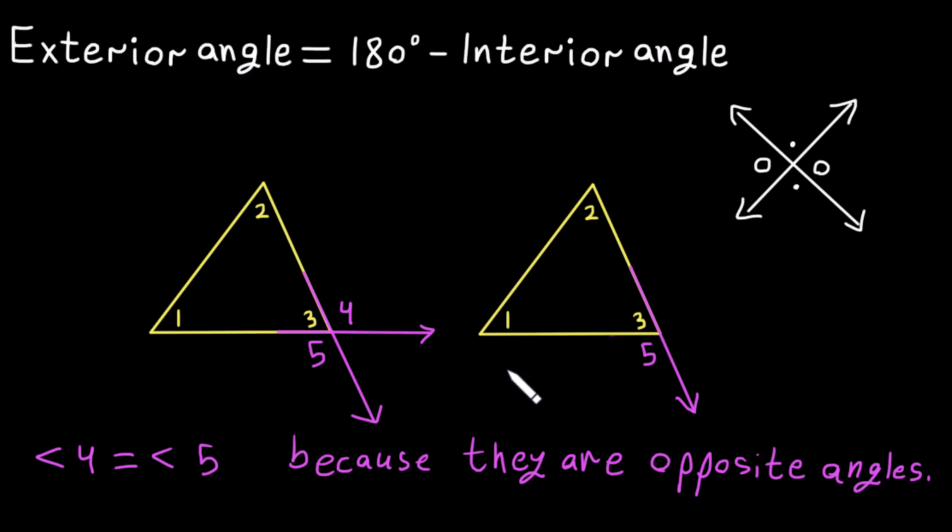That's it. I hope this video answered the question of why there are two exterior angles at a vertex and why they are equal in a clear way. If you found this helpful, please like, share, and subscribe for more math videos. Feel free to comment below if you have any questions or suggestions. Thanks for watching!